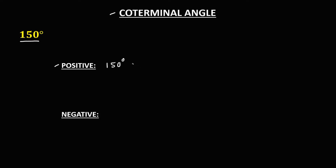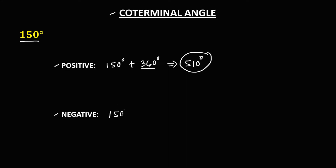For the positive coterminal angle, from the given angle 150 degrees, we add 360 degrees because one rotation is equal to 360 degrees. So the positive coterminal angle for 150 degrees is 510 degrees.